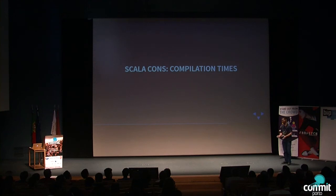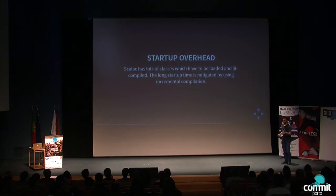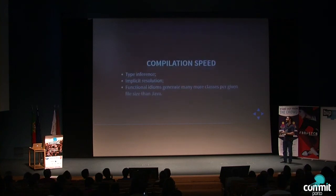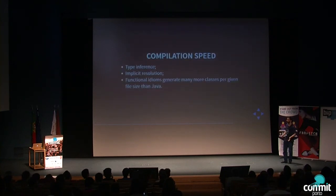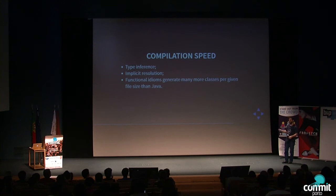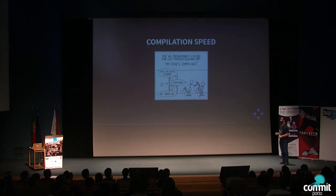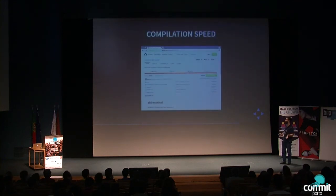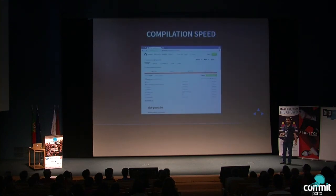Another Scala con is compilation time. There is a startup overhead, and although incremental compilation exists, Scala is still slow at compiling. Why? Because it has to do type inference, resolve implicits, and functional idioms as well as anonymous functions generate a lot more classes per file than Java. The excuse for slacking off while code is compiling is very legitimate in Scala — the situation is so extreme that there are plugins to play music or show YouTube videos while the code compiles.